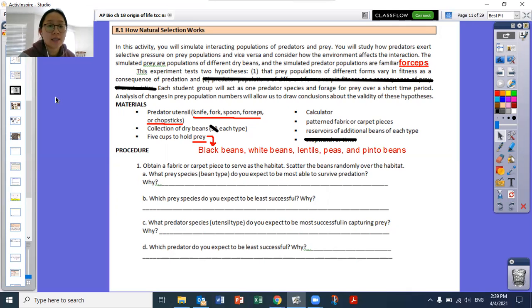And so we would have utensils that you'd be using as the predator's mouth parts for them to capture prey. And then we'd have different kinds of beans. So the predators would have been like if you have two knives, two forks, two spoons, and then chopsticks or the actual tweezer forceps. And then the beans, there's five kinds: black beans, white beans, lentils, peas, and pinto beans.